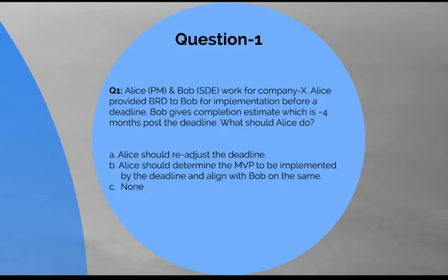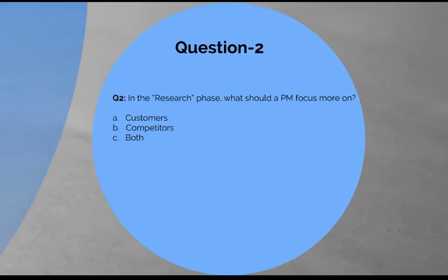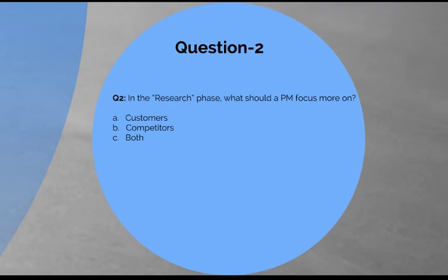Working on an MVP with the tech teams helps to expedite the implementation process. Now let us move on to the next question. In the research phase, what should a PM focus more on? Choose from the following options: A. Customers, B. Competitors, C. Both customers and competitors. The correct answer is A. PM's research should focus more on customers than competitors. Knowing about competitors is needed, but the focal point should be customers.